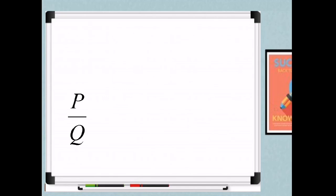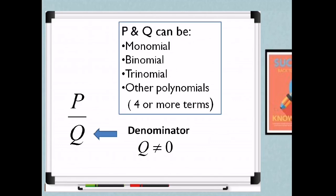So we have P over Q — that will be our rational algebraic expression. The definition states that Q is our denominator, wherein it should not be equal to zero. So if Q is equal to zero, therefore it is not a rational algebraic expression. P and Q can be monomial (consisting of one term), binomial (consisting of two terms), trinomial (consisting of three terms), or other polynomials for four or more terms.